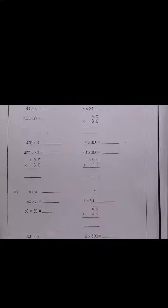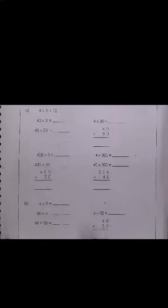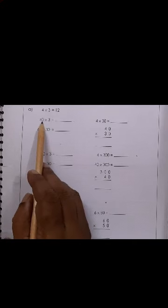Now children, move to page 59. Children, this I have already discussed. Multiplication by 10, 100, and 1000. You remember this is the same page. We have done it previously and it is repeated over here. Children, very simple when you multiply by 10.